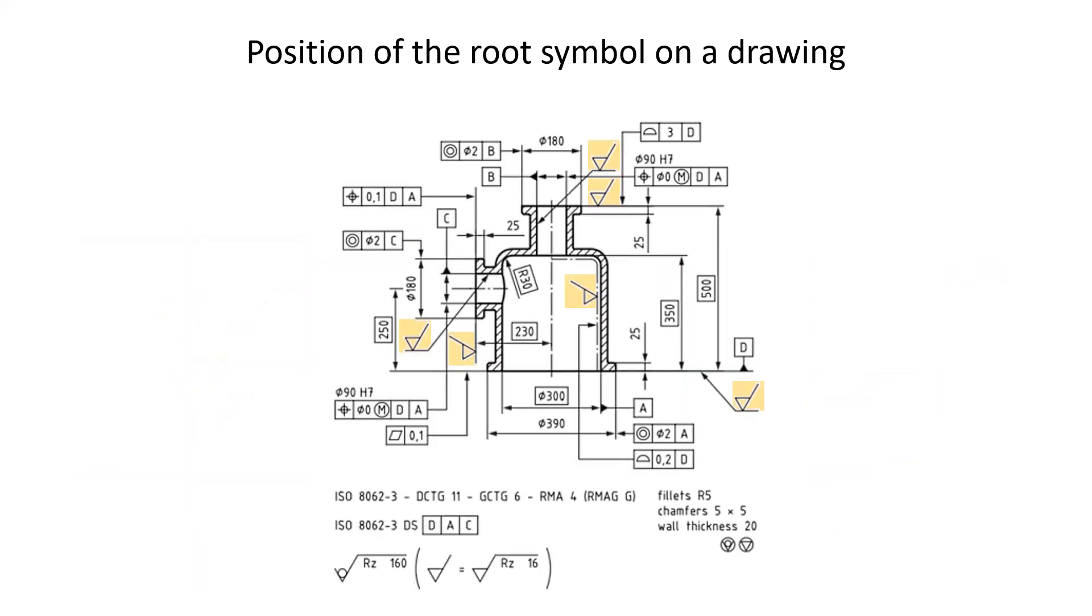In the case of a complex drawing or when there are many surface texture specifications, it is possible to use simplified symbols that are explained elsewhere on the drawing. Here in this example, a general specification applies on all surfaces with a tolerance of 160 micrometers on RZ without removal of material, except when marked with the simplified symbol that corresponds to a tolerance of 16 micrometers on RZ with removal of material.